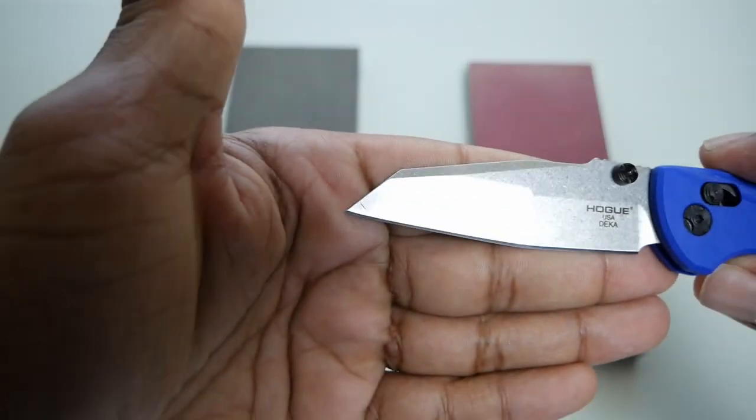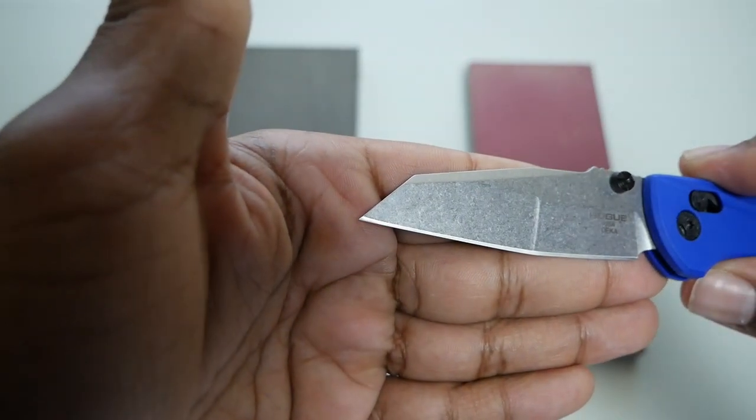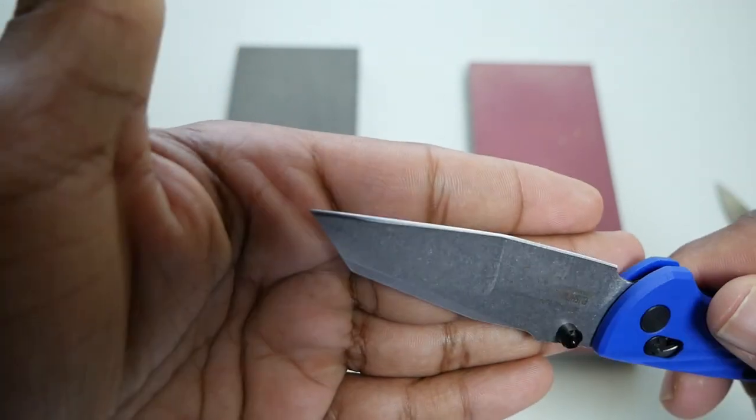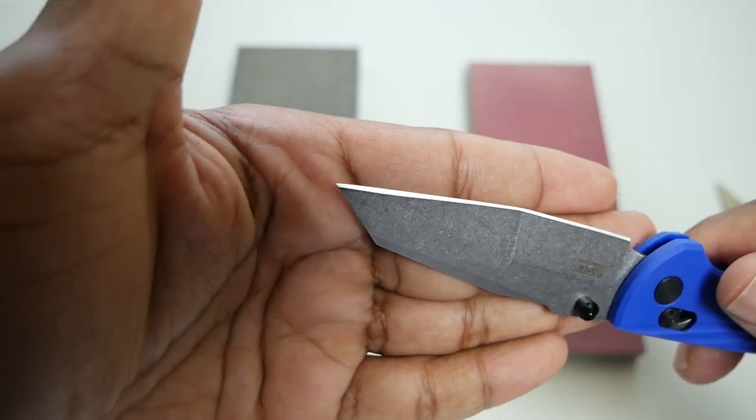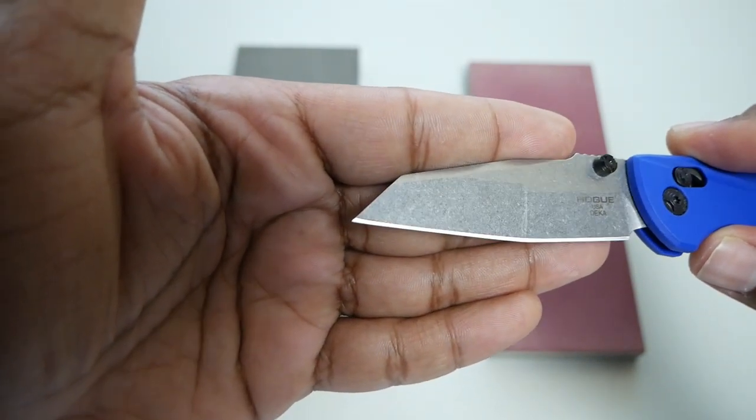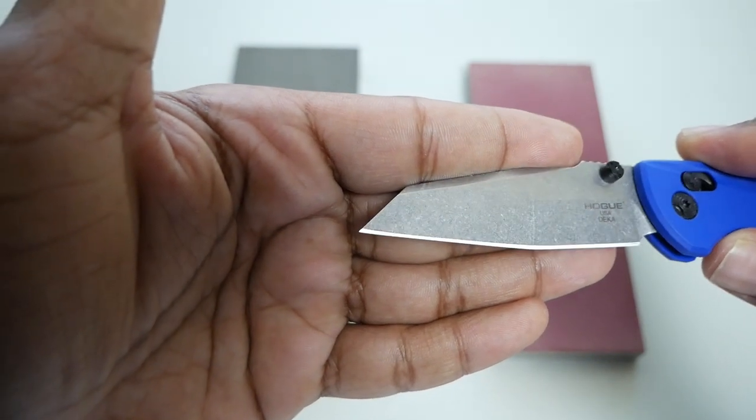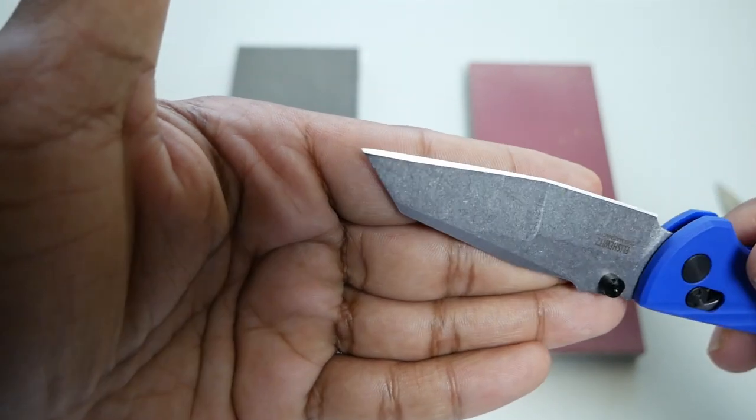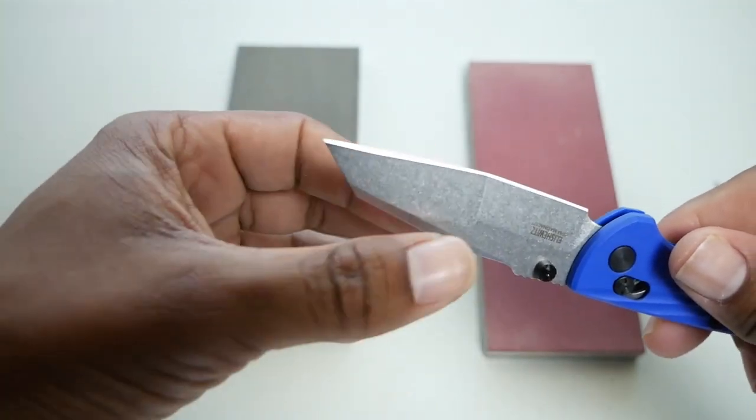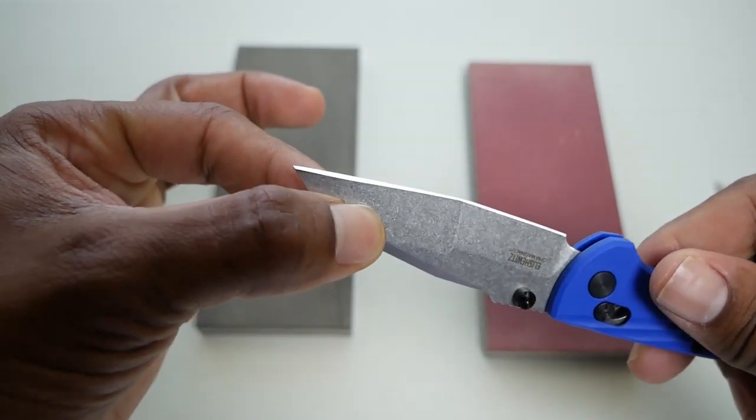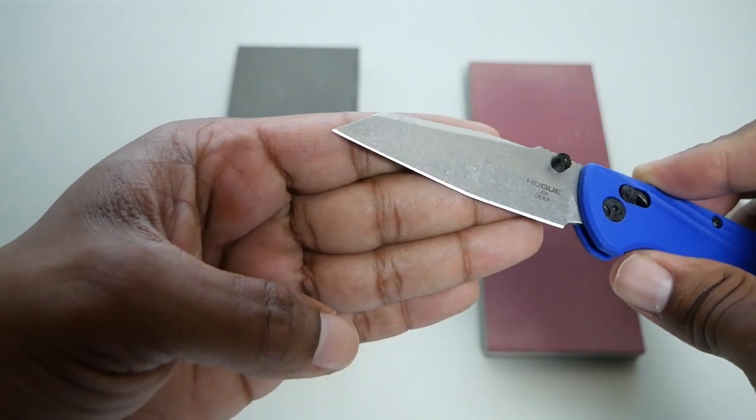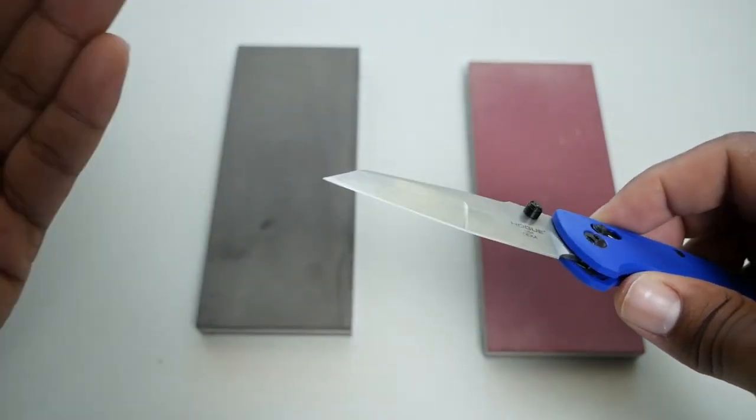One of the questions that came up was would laying the edge back possibly give this knife a little more wear resistance and also be able to have a little more edge stability even at that lower edge angle because it is MagnaCut. This knife is roughly 20 thousandths behind the edge and that bevel is pretty apparent. I would venture to say if it's 20 thousandths behind the edge and this bevel is this wide, this is probably about 15 degrees per side, which is pretty standard.